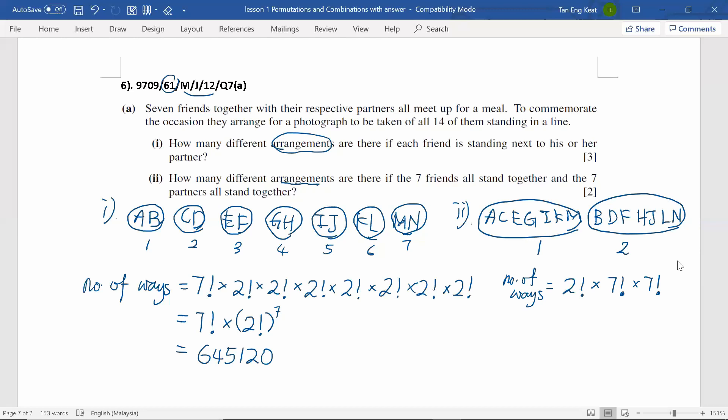Then, this is going to give us the number of different arrangements where all seven friends stand together and their partners stand together. By using calculator, we will get the number of ways is 50,803,200.